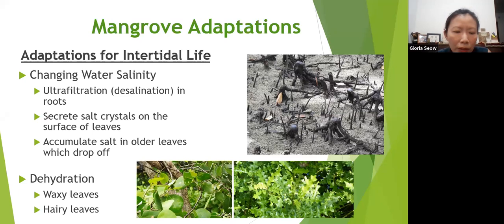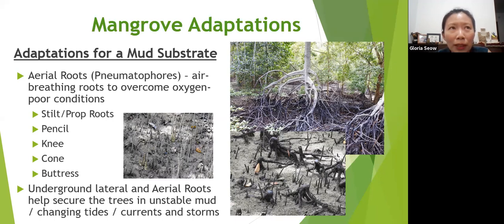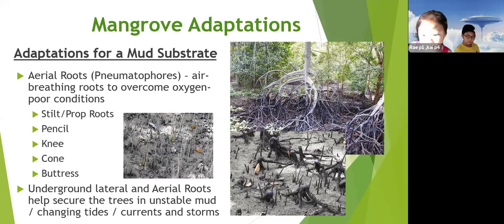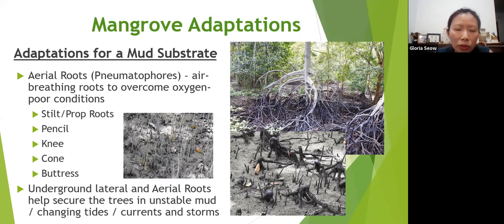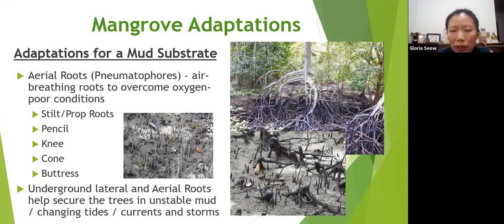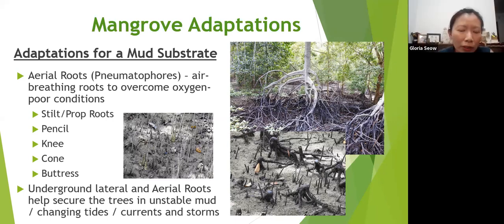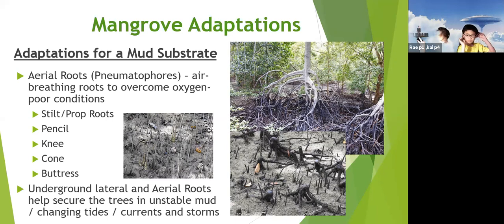Mangroves can also withstand dehydration because of their thick, waxy, and hairy leaves — the wax helps to retain water within the leaves. They are also adapted for mud substrate, meaning that mangroves grow in very soft mud, not solid land. If a human walks there they will sink in — I've sunk up to my knees and you can even sink to waist level. So mangroves have aerial roots also called pneumatophores which help to breathe air, because mud is very anoxic — very low in oxygen content.